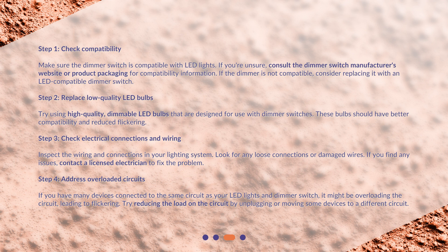Step 2: Replace low-quality LED bulbs. Try using high-quality, dimmable LED bulbs that are designed for use with dimmer switches. These bulbs should have better compatibility and reduced flickering.